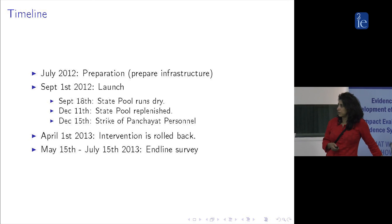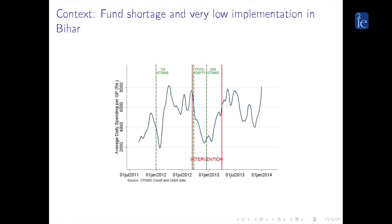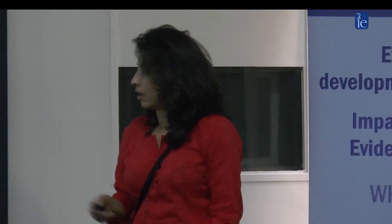This graph shows the average daily spending per GP from the CPSMS. As we know, the dry period is a period of high activity. Then there was a decline largely because of the strike, and then it went up again. Really, if you want to think about the period we're evaluating in terms of work happening, it's not that large — it's January to March, over three or four months that we're going to see activity.